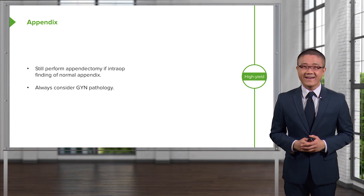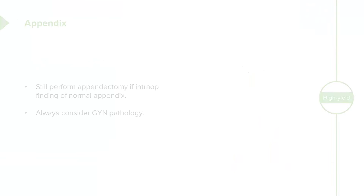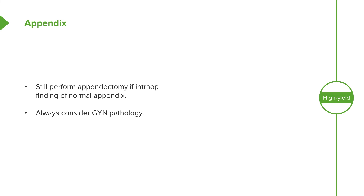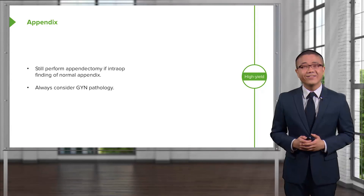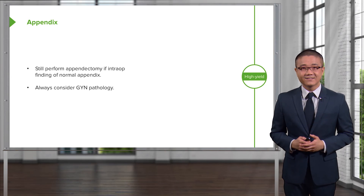High-yield facts for your examination: if the scenario presents a patient you're pretty certain has appendicitis, you're in the operating room and the appendix appears normal, I would recommend you still perform a completion laparoscopic appendectomy and remove the appendix. Remember, always consider GYN pathology, particularly in childbearing-age women. Thank you very much for joining me on this module on acute appendicitis.